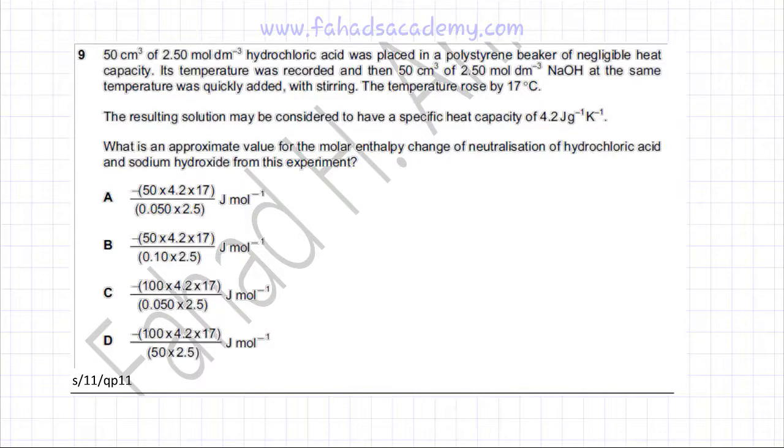The following chemical energetics question is related to calculating the experimental energy change. The question states that 50 cm³ of 2.5 mol per dm³ hydrochloric acid, let's underline that,